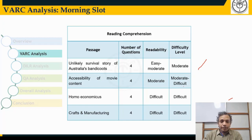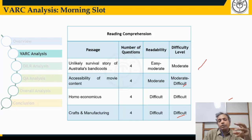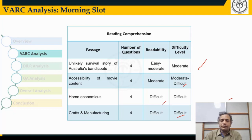The passages on economics and crafts and manufacturing were the two most difficult to read. They were also tough to answer due to both the complex reading and the closeness of the answer options — something one would expect in RC questions. The other two passages were fairly okay to answer. The lengths of all passages were around 400 words each, so no surprise there in terms of length.